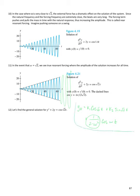We'll follow our usual process and start by solving the homogeneous equation: y'' + 2y = 0. That gives y_h = k1·cos(√2t) + k2·sin(√2t).